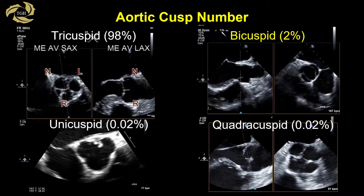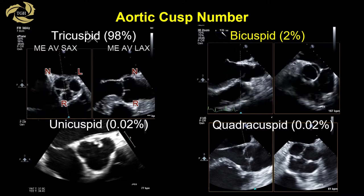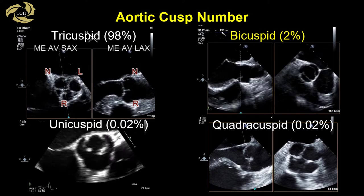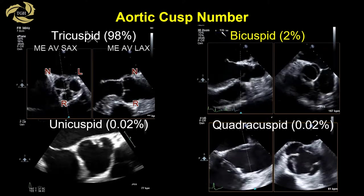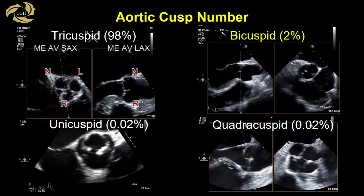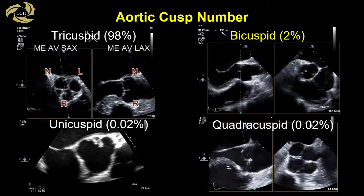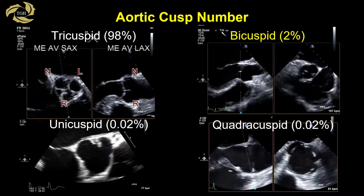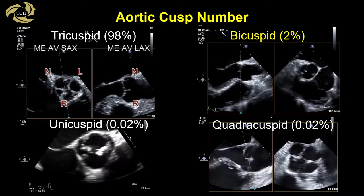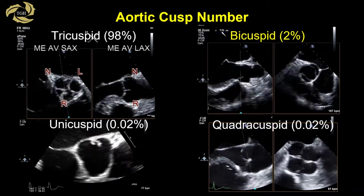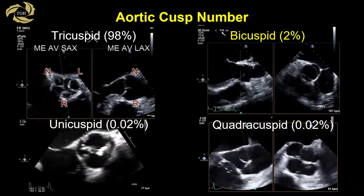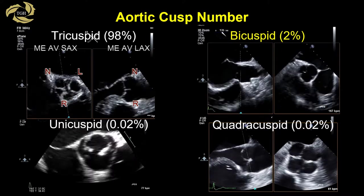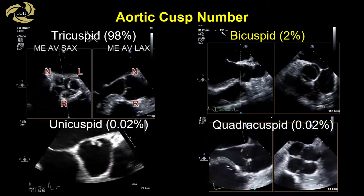The number of cusps can vary for the aortic valve. Most valves have three cusps, but two, one, and even four cusps may be present. Each valve with an abnormal number of cusps has associated morbidity and specific echo findings. This talk will focus on the bicuspid aortic valve.